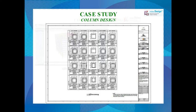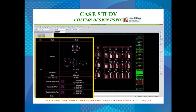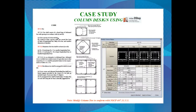Another option is to use MidasDshop, which is more convenient and appropriate. You can easily export the MidasGen model to a Midas drawing file in MGN format to link to Dshop. By then, you can generate the column section in CAD format and place it directly into your standard office title block. You can also arrange the tie spacing manually using the facility within Dshop.